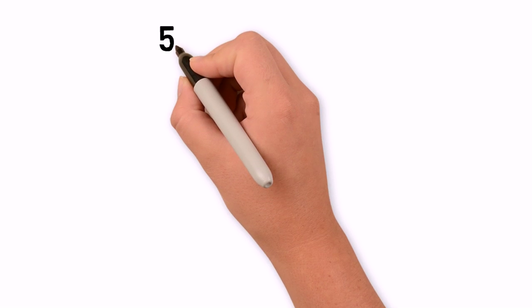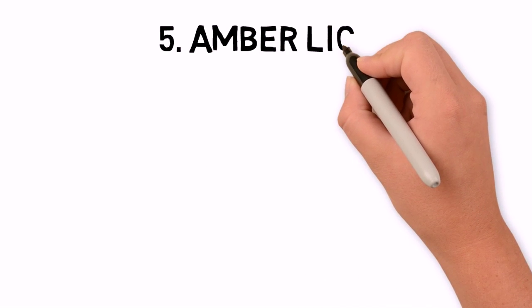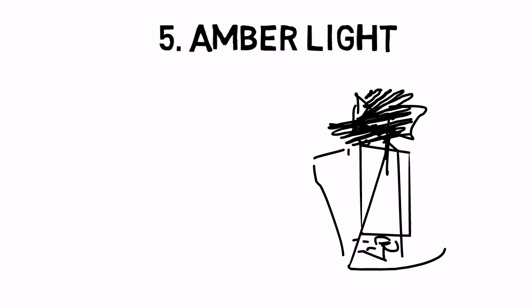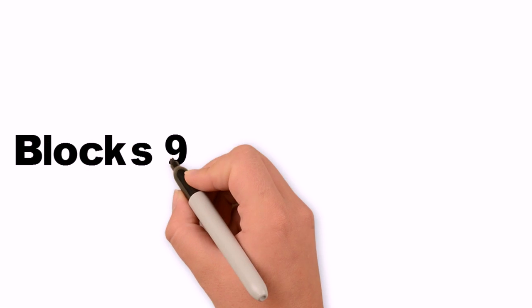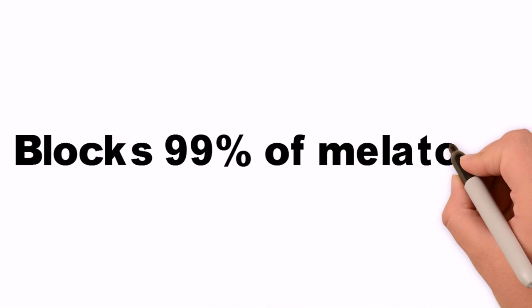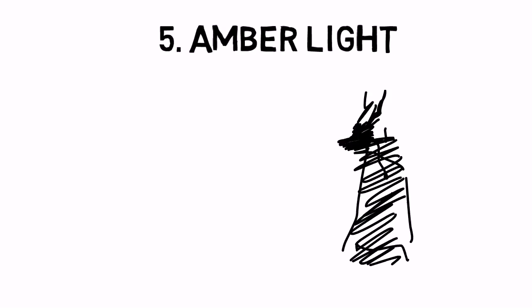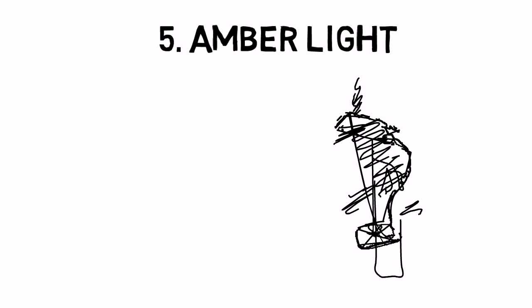Habit five: amber light. At night, blue light from cell phones, computer screens, and overhead lighting has been proven to block production of the sleep hormone melatonin by up to 99 percent. Using amber lighting from candles and amber lamps...